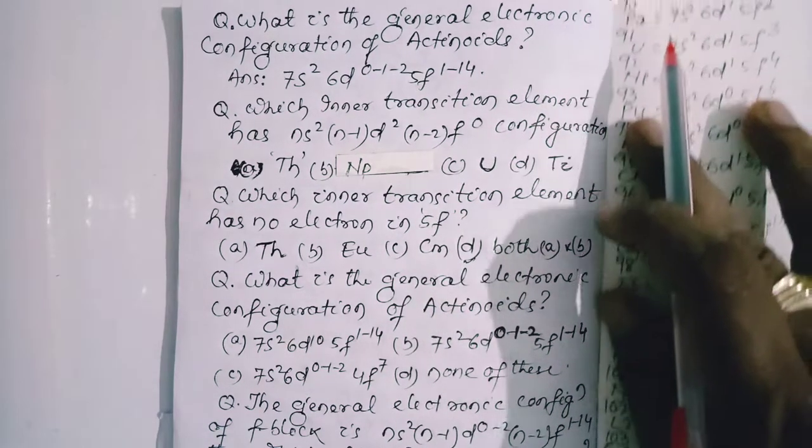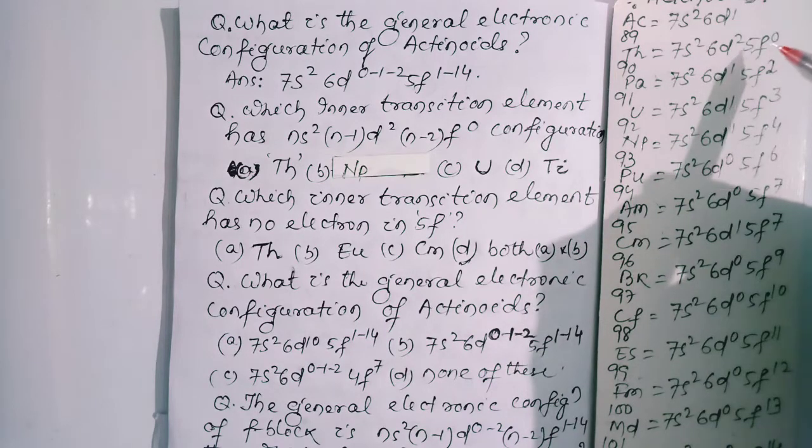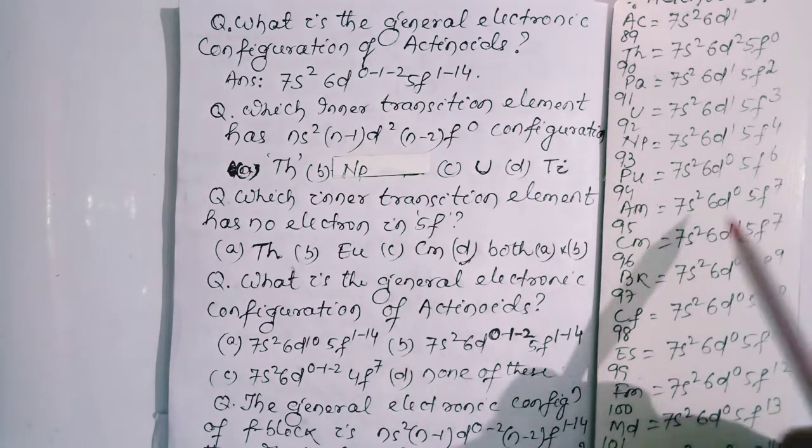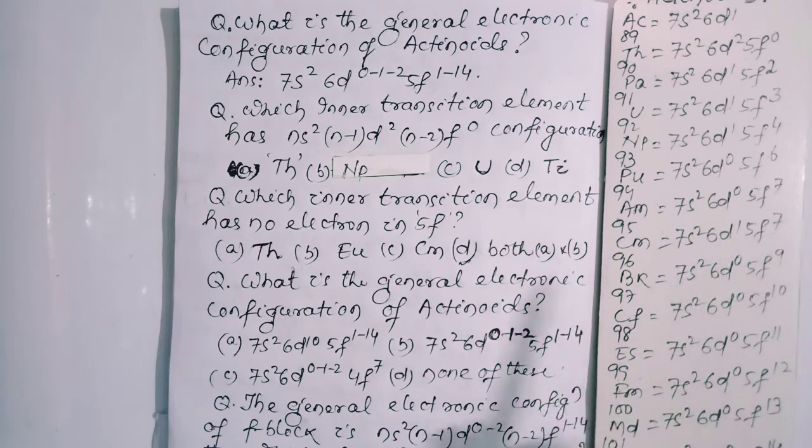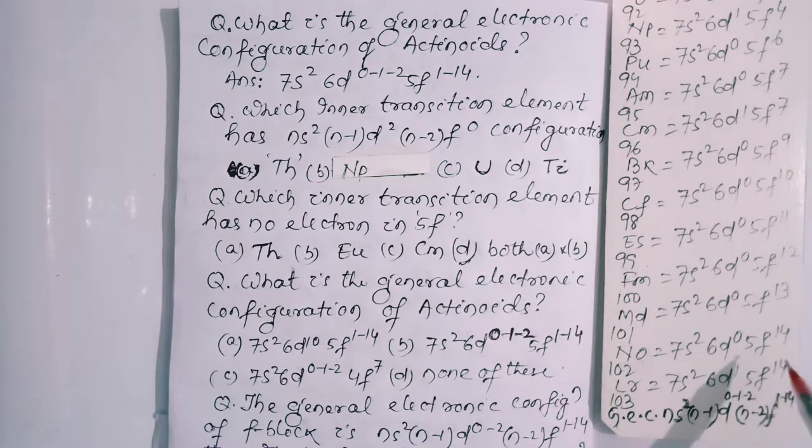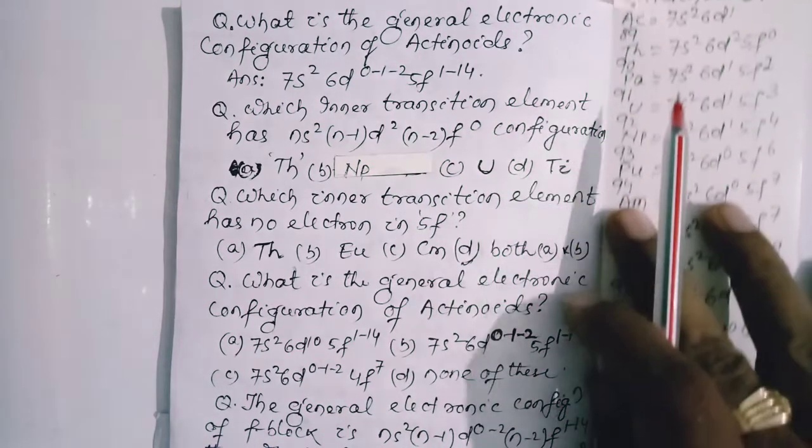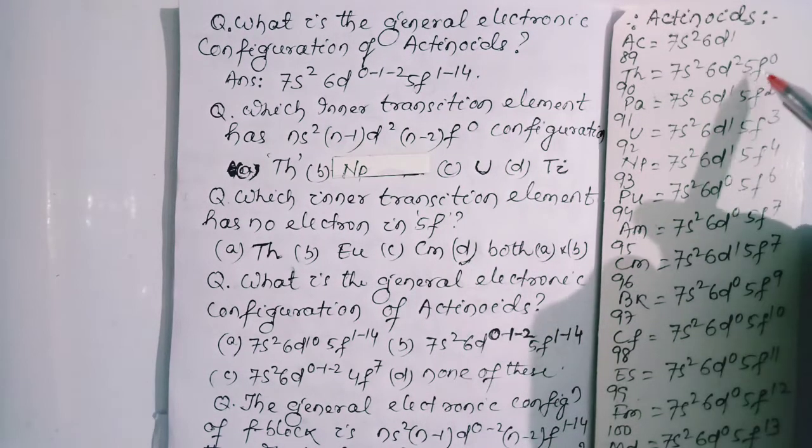For stability, f sometimes becomes 0, f sometimes becomes 7, or f sometimes becomes 14. So f¹⁴, f⁷, and f⁰ are comparatively more stable.